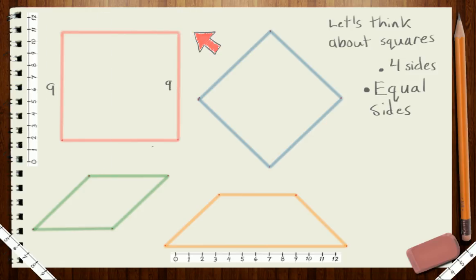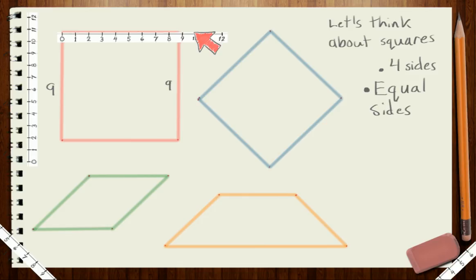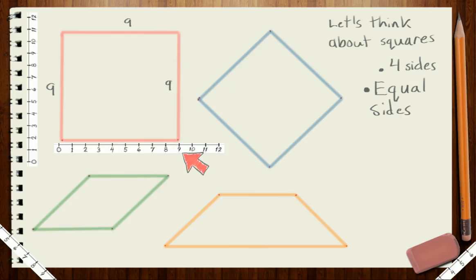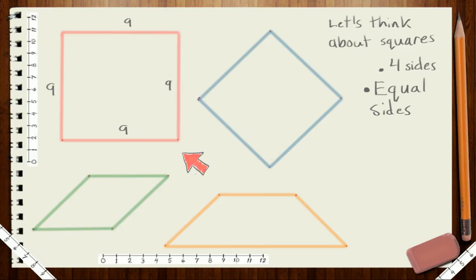What about the top and the bottom? If I look at the top, I can see that it measures nine units. And the opposite side? It, too, measures nine units. So, based on our rules, because all the sides have the same length, the red shape could be a square.